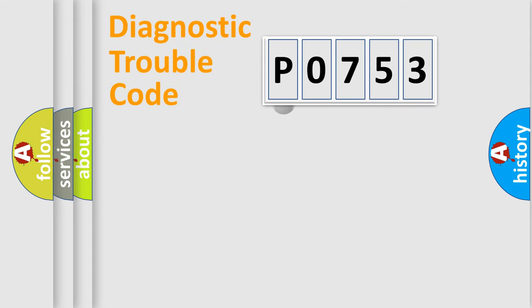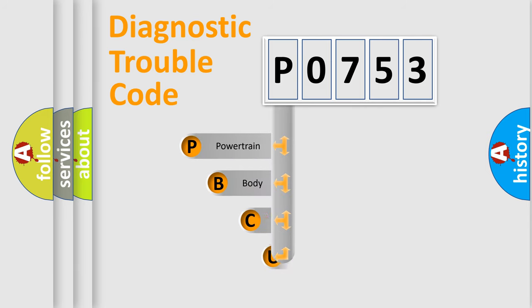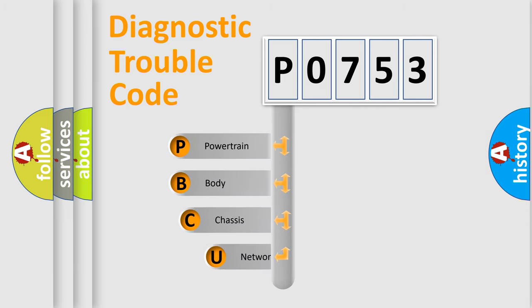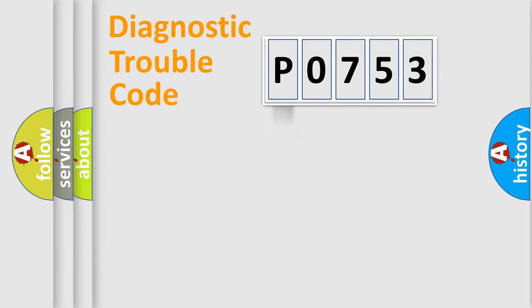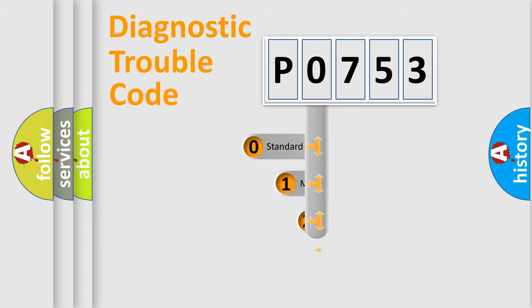First, let's look at the history of diagnostic fault code composition according to the OBD2 protocol. We divide the electric system of an automobile into four basic units: powertrain, body, chassis, and network. This distribution is defined in the first character of the code.